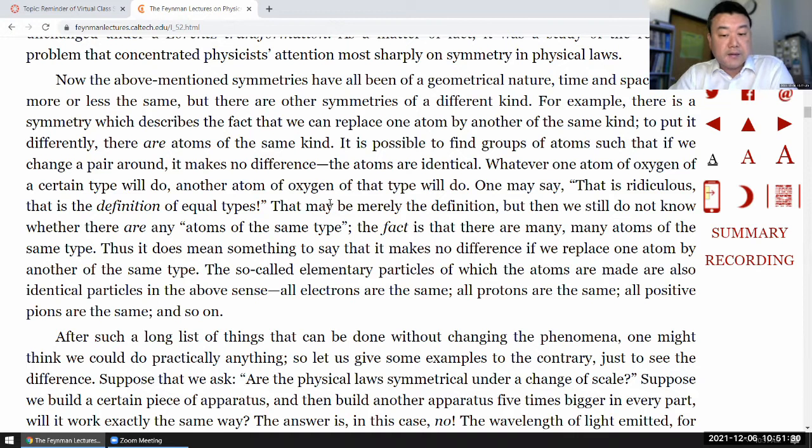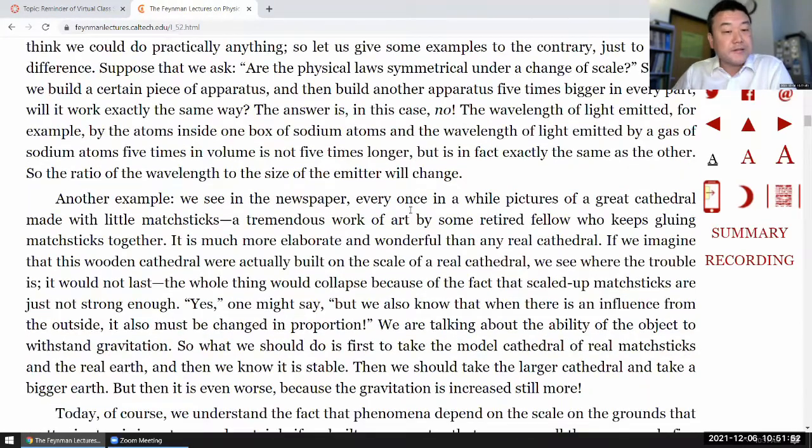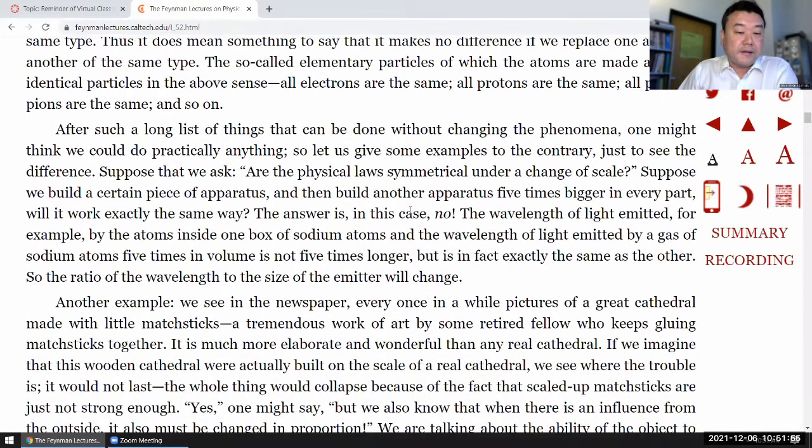Whatever on one atom of oxygen of a certain type will do, another atom of oxygen of the type will do. One may say that is ridiculous, that is the definition of equal types. That may be merely the definition, but then we still do not know whether there are any atoms of the same type. The fact is that there are many, many atoms of the same type. Thus, it does mean something to say that it makes no difference if we replace one atom by another of the same type. The so-called elementary particles of which atoms are made are also identical particles in the above sense. All electrons are the same. All protons are the same. All positive pions are the same. And so on. All neutrons are the same. After such a long list of things that can be done without changing the phenomena, one might think we could do practically anything. So, let us give some examples to the contrary, just to see the difference.